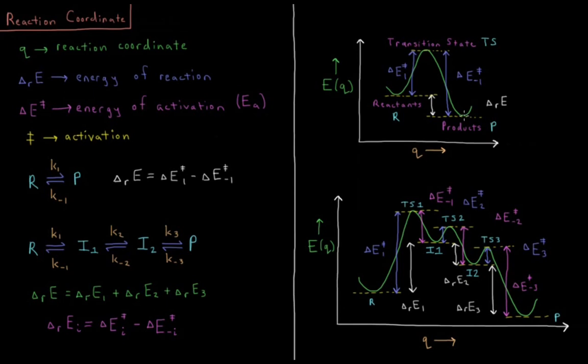Our energy change during the reaction is the energy of the final state minus the energy of the initial state. It's the energy of the products minus the energy of the reactants. So delta RE is indicated by this arrow in white there.